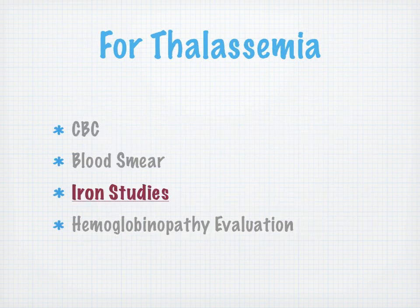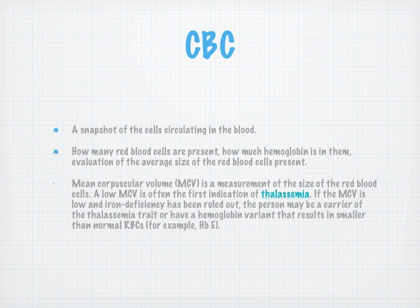For thalassemia, you do a CBC, blood smear, iron studies, and a hemoglobinopathy evaluation. The CBC gives a snapshot of circulating cells — how many red blood cells are present, how much hemoglobin is in them, and their average shape and size. The mean corpuscular volume (MCV) measures red blood cell size. A low MCV is often the first indication of thalassemia. If MCV is low and iron deficiency anemia has been ruled out, the person may be a carrier of thalassemia trait or have a hemoglobin variant causing smaller-than-normal red blood cells.